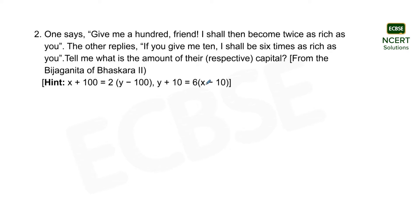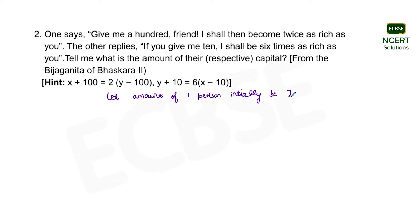These are the two equations which can be formed from the problem. We will be focusing on how these equations are formed. Let the initial amount of one person be rupees x per capital, and the initial amount of the other person be rupees y per capital.